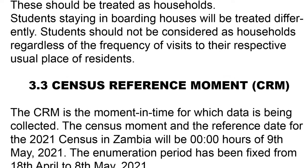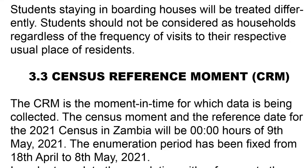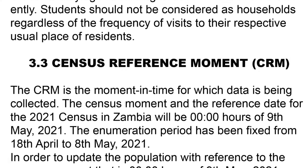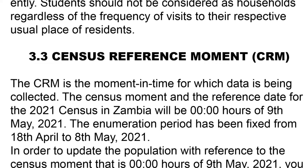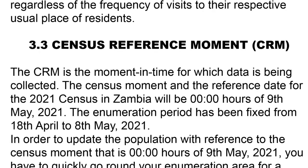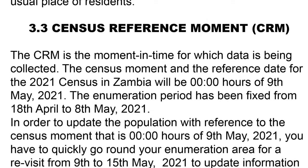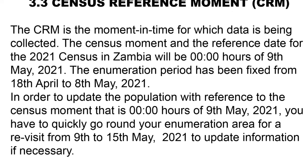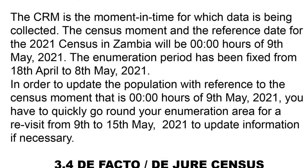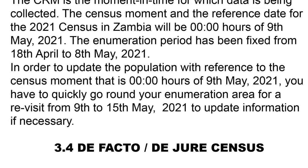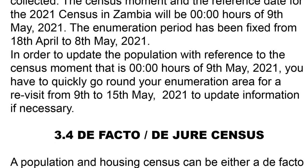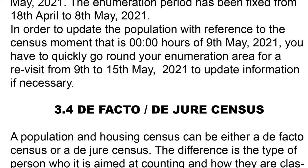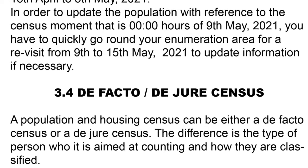The Census Reference Moment (CRM) is a moment in time for which data is being collected. The census moment and reference date for the 2021 census in Zambia will be the midnight hour of 9th May 2021. The enumeration period has been fixed from 18th April to 8th May 2021. You will need to revisit your enumeration area from 9th to 15th May 2021 to update information if necessary.